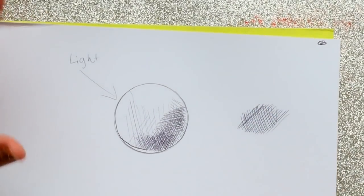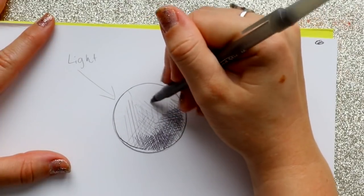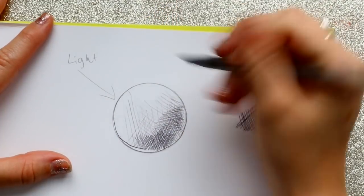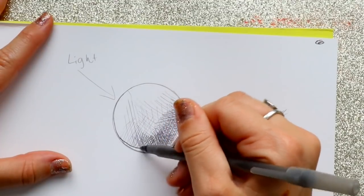So to get lighter, all you would have to do is make your lines more spread apart. But the darker you want to get, you bring those lines closer together.